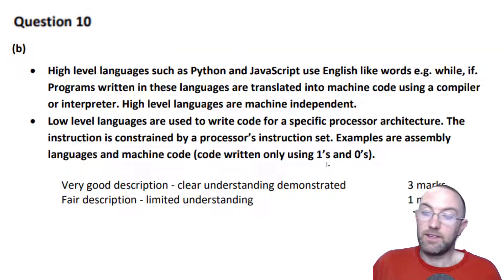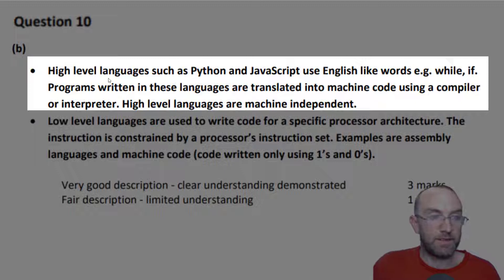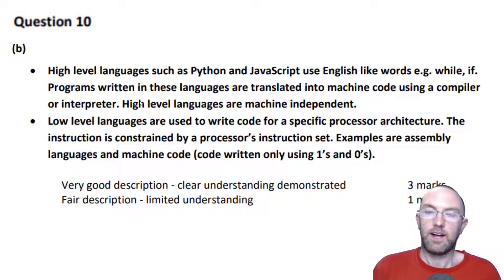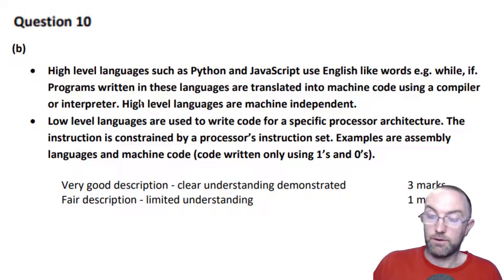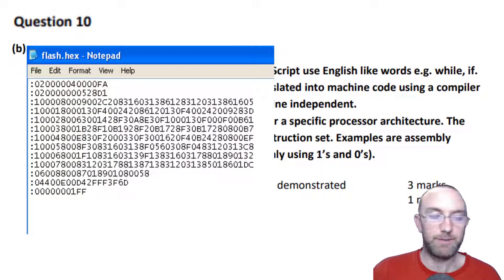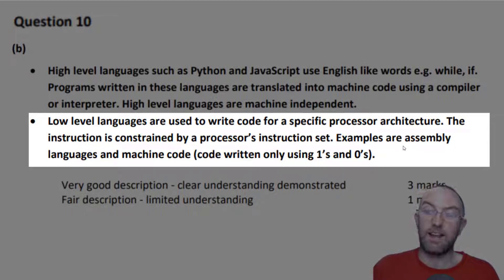The marking scheme says high-level languages use English words like 'while', 'if', 'set', 'print'. Programs written in these languages are then translated into machine code using a compiler or interpreter. For example in C you press compile then run; with Arduino and Microbits, when you press save it compiles - the saved file is all ones and zeros. Low-level languages are written for specific processor architectures, constrained by the processor's instruction set, with examples being assembly language and machine code in ones and zeros.